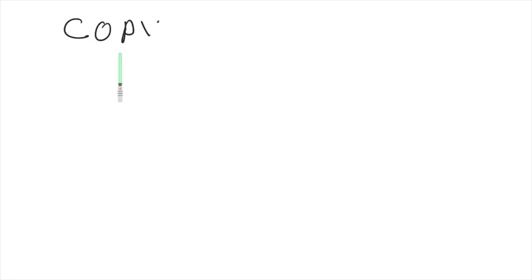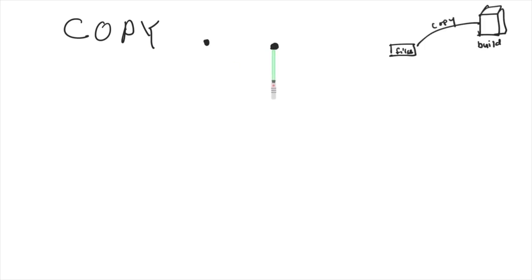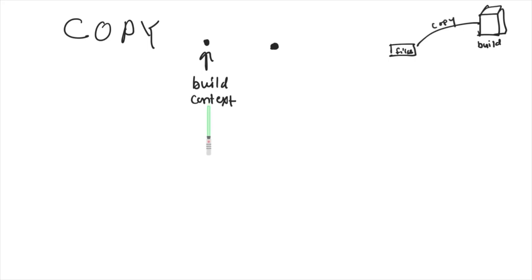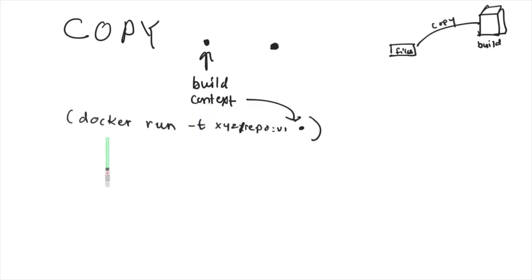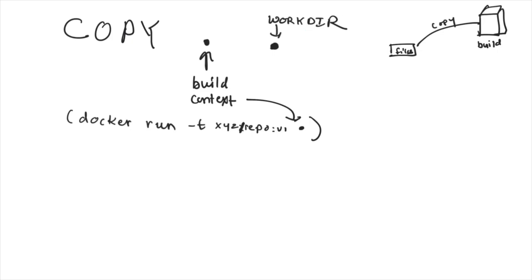COPY instructions are typically used to copy files to the container during the build process. You might see 'COPY . .' — these two dots are both relative paths. The first dot is relative to the build context, which is whatever path you define with the docker build command. The second dot, the destination, is relative to the WORKDIR. If you just say dot, files get copied into your defined WORKDIR.